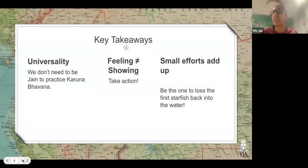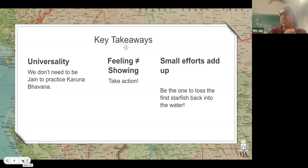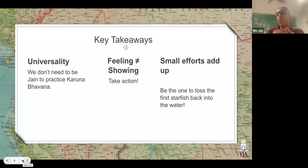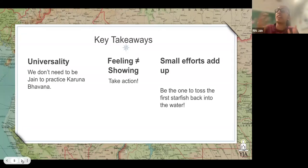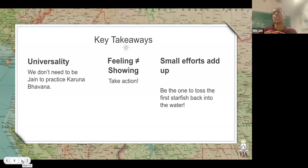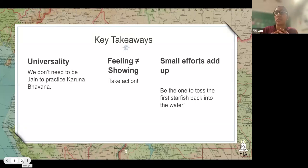So here are some key takeaways we can implement in our own lives. Number one: the universality of karuna bhavana. Whether it's the boy with the starfish or the person who started the Village of Hope — who is not Jain — these are all key examples of karuna bhavana. You don't need to be Jain, you don't need to belong to a particular religion, ethnicity, nationality, or socioeconomic class. Karuna bhavana comes from within; it's about humanity, which we all have and all have the potential to show.